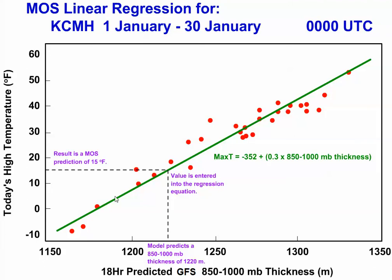That's represented by these red dots on the graph, which plots observed high temperature along the axis on the left and model forecast for 1,850 millibar thickness along the bottom. This data set happens to be taken from observations and model forecasts for Columbus, Ohio during the month of January.